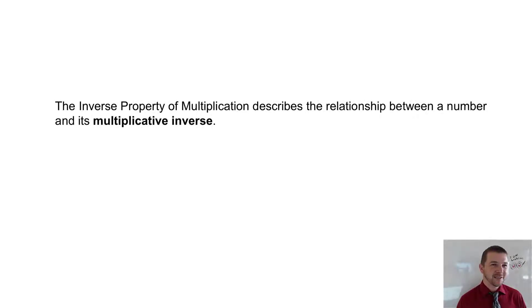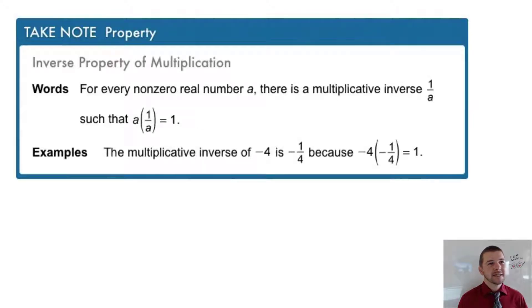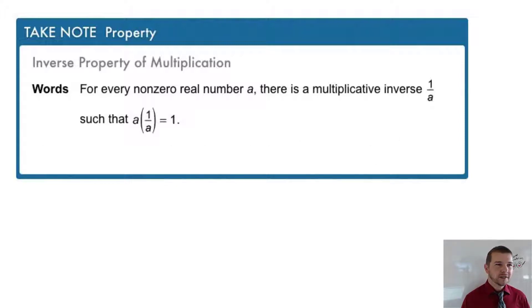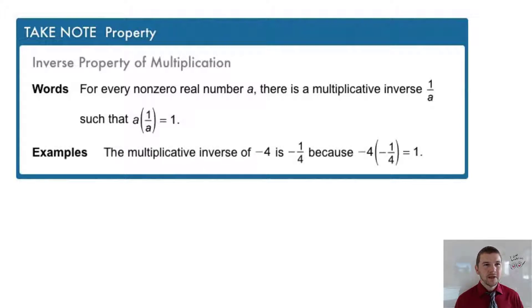The inverse property of multiplication describes the relationship between a number and its multiplicative inverse. In words, we can state: for every non-zero real number a, there is a multiplicative inverse 1/a such that a times 1/a equals 1. For example, the multiplicative inverse of -4 is -1/4.